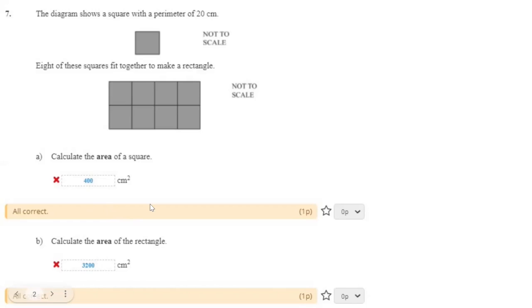All right. In all these numbers, they're obviously wrong. All right, the diagram shows a square with a perimeter of 20 cm. We have keywords here.